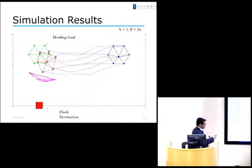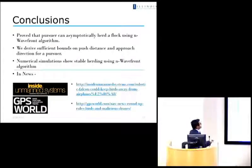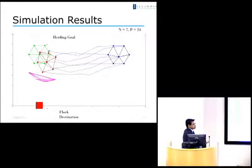So in conclusion, we proved that the pursuer can asymptotically herd the flock using the wavefront algorithm. And we derived some sufficient bounds on the push distance and approach direction. These are really important for us, because if you do not honor the stability requirement that you have, you would either cause the flock to fragment, or you would cause the flock to spillover, as in, in this case, the flock would kind of spillover and move towards the flock destination, irrespective. It would essentially go just past you.